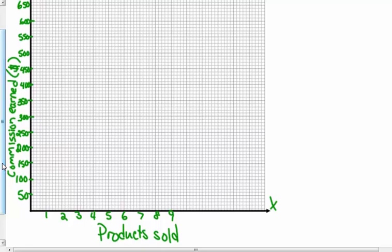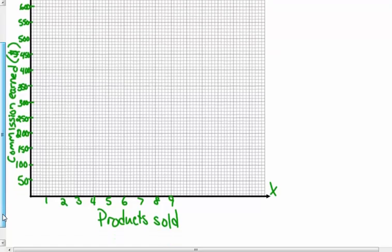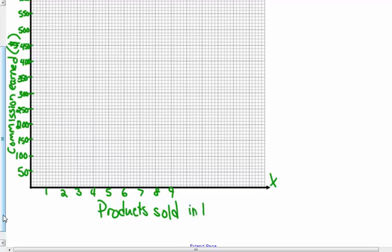So plotting these points — one thousand products sold gives a commission of one twenty, so that point goes here. Two thousand is one ninety. Four thousand and three thirty. Five thousand and forty — I bet that's an outlier.